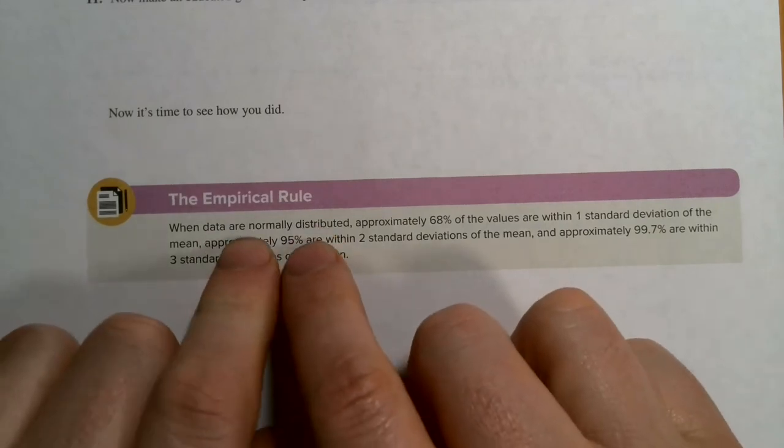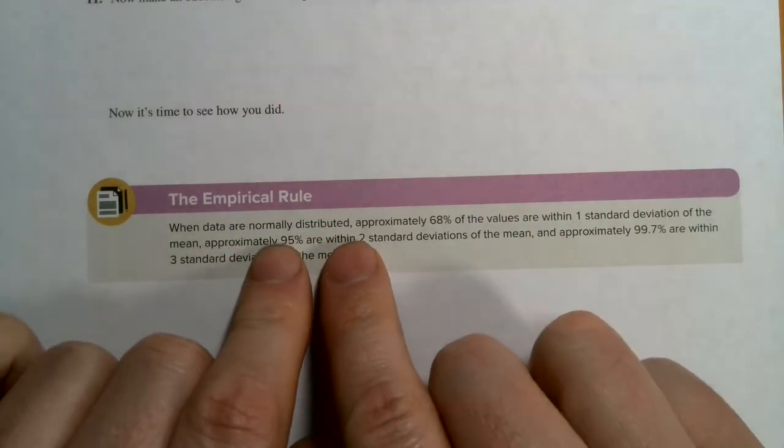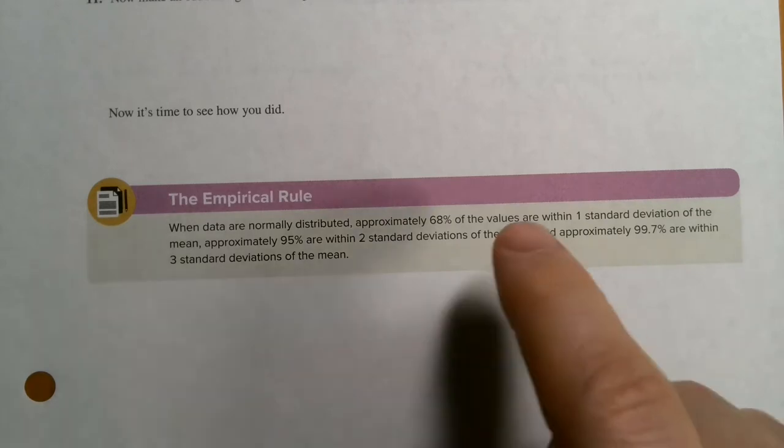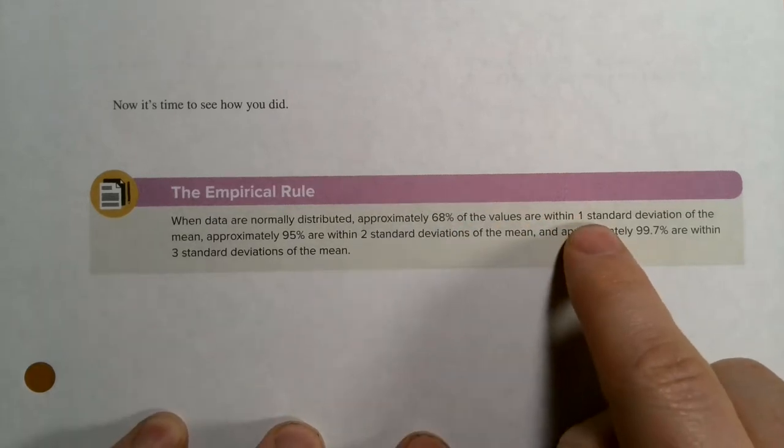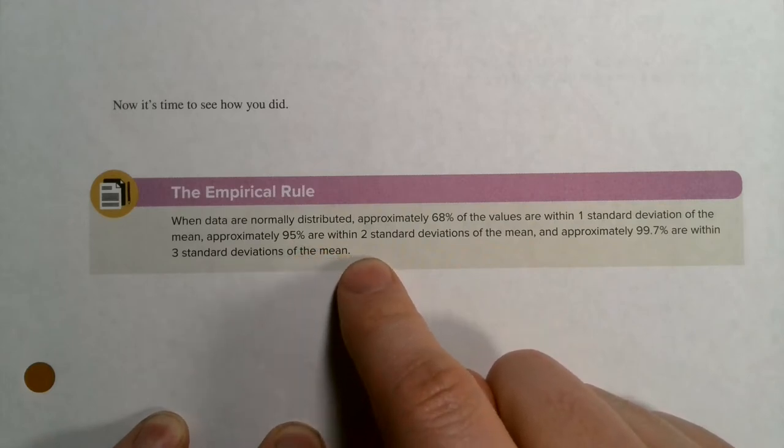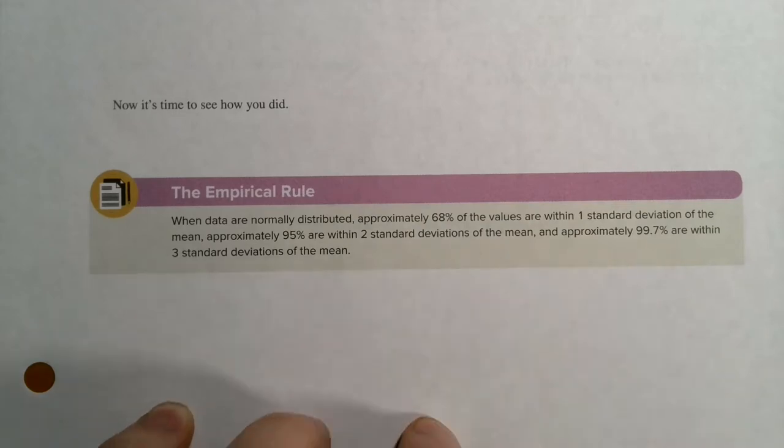What you're going to discover is that when we have a normal distribution, we can use an empirical rule to talk about what percentage of the values are within a certain amount of standard deviations. So 68% is plus or minus one standard deviation away from the mean, 95% above and below two standard deviations, and then 99.7% plus or minus three.